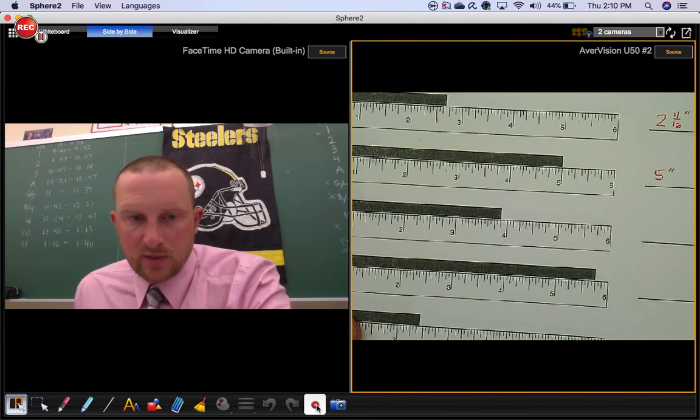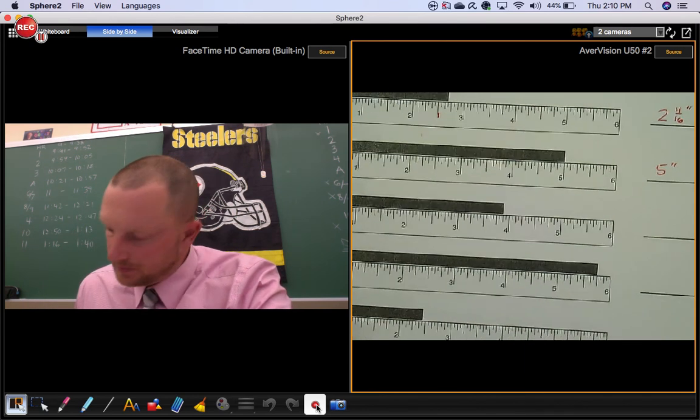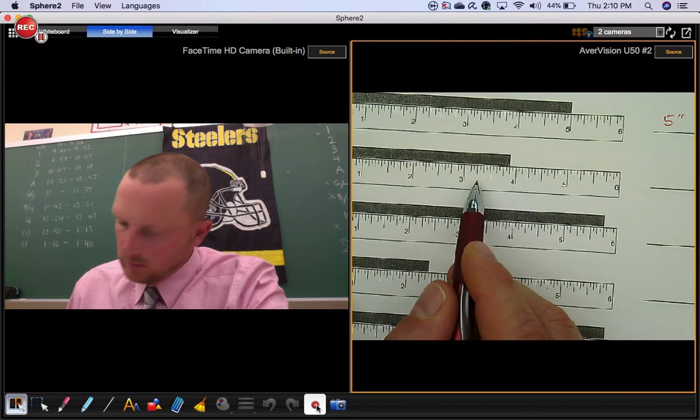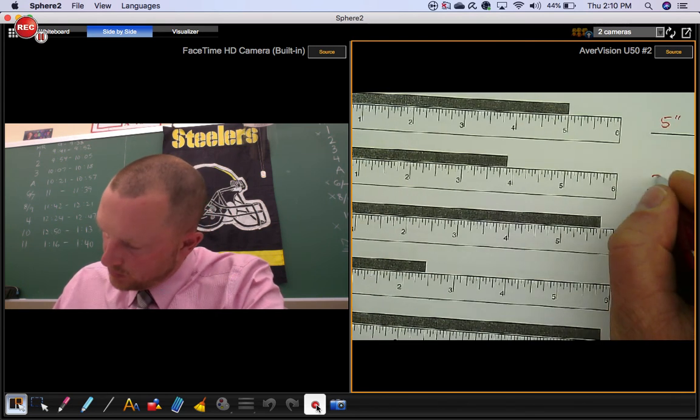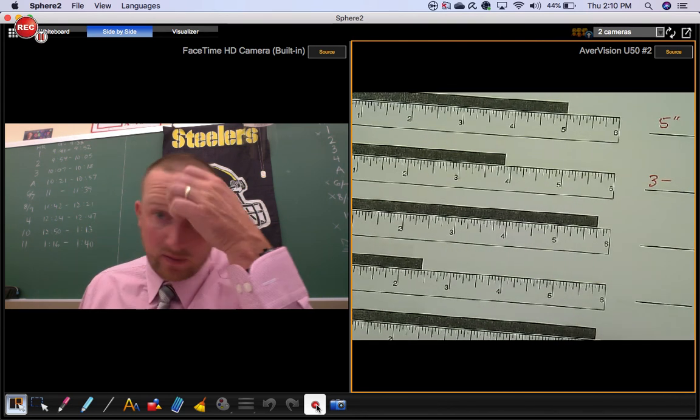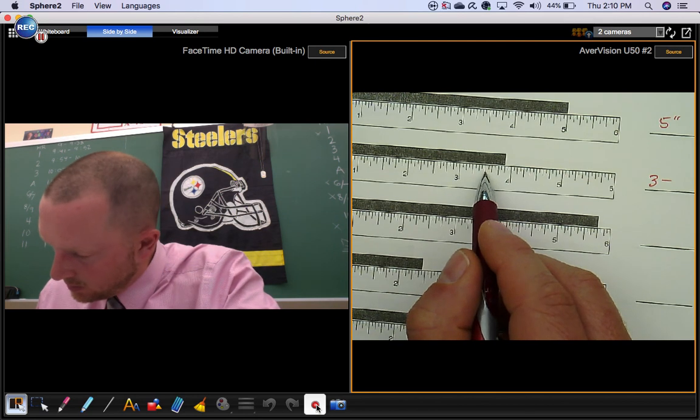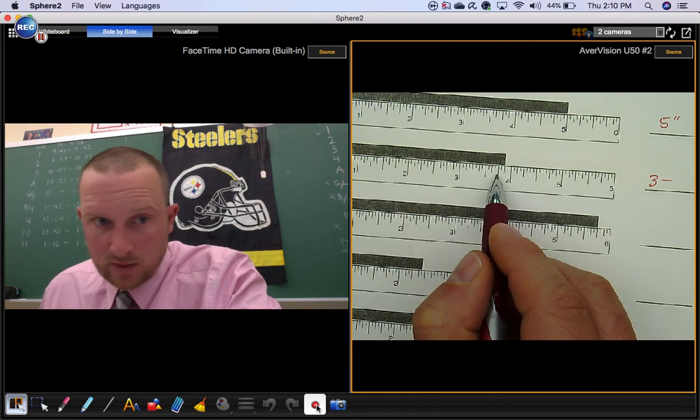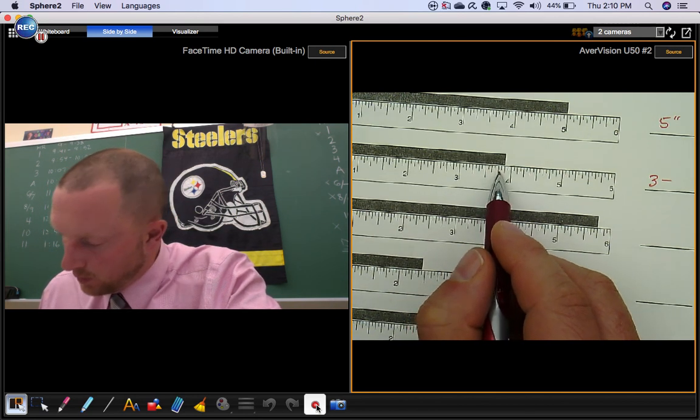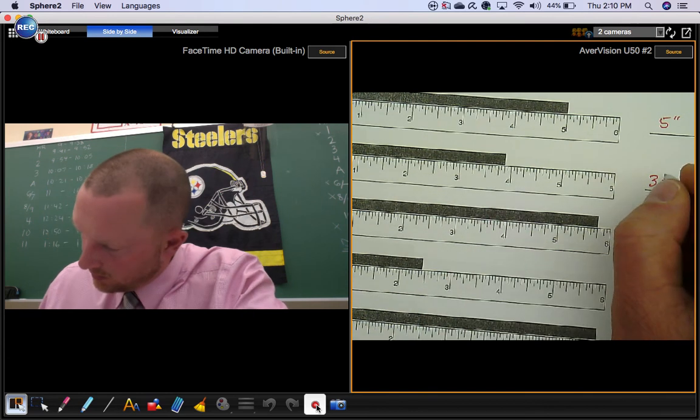Next one's pretty easy when it falls on a whole number. This one's definitely bigger than three inches. Again if you count onward from 8 sixteenths, that's the halfway point. I know that's 12 sixteenths, that's three fourths. 13, 14 sixteenths.